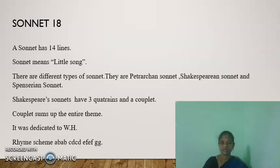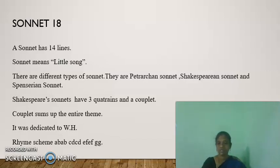Now let us pass on to the sonnet and its structure. Sonnet means 'a little song.' The sonnet has fourteen lines. There are different types of sonnets such as the Petrarchan sonnet, Shakespearean sonnet, and Spenserian sonnet. Shakespearean sonnets have three quatrains and a couplet, and the couplet sums up the entire theme.